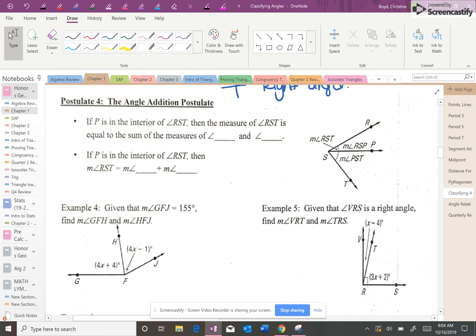Now, we had the segment addition postulate, which said that if you took two segments and you add them together, you get a larger segment. Listen, the same thing happens for angles. If you have two angles and you put them together, you make a larger angle. So this says that if this angle, RST, is broken up into two separate angles, you could add together RSP and angle PST.